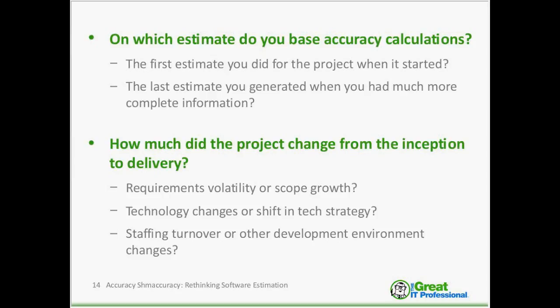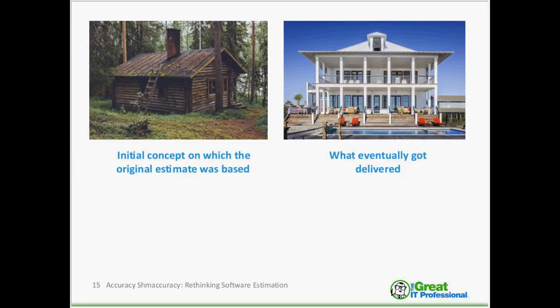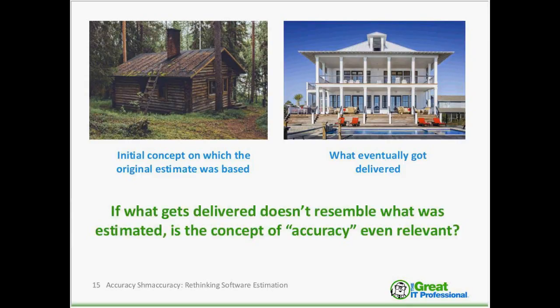Let's look at an example outside of software development. At the beginning of a project, we estimated a log cabin based on the requirements we had at the time. But through changes in scope and requirements throughout the project, it was revealed that what the client really needed was a beachfront vacation home — which is what got delivered. Was our first estimate accurate based on the information we had at the time? Maybe, but what good is that when you end up spending a lot more and delivering something that didn't look like what was asked for?